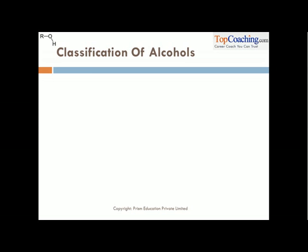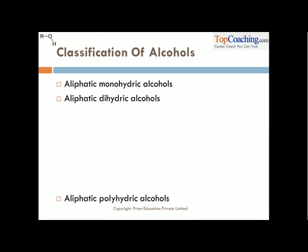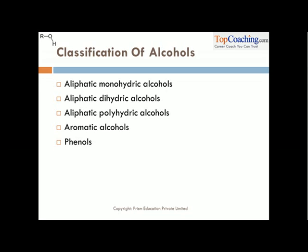Being science students, we are in the habit of classifying everything so that we can study them more easily. So we classify alcohols as well: aliphatic monohydric, aliphatic dihydric, aliphatic polyhydric, aromatic, and phenols. These are the five classifications of alcohols which we are going to study from now.